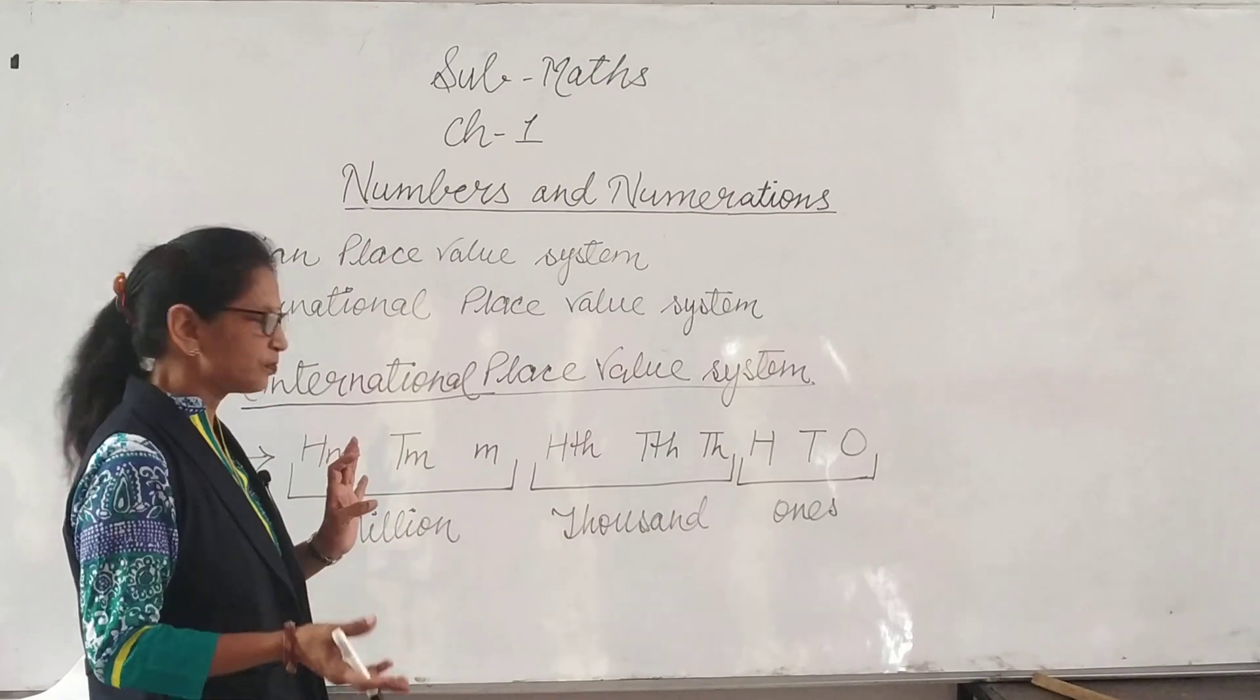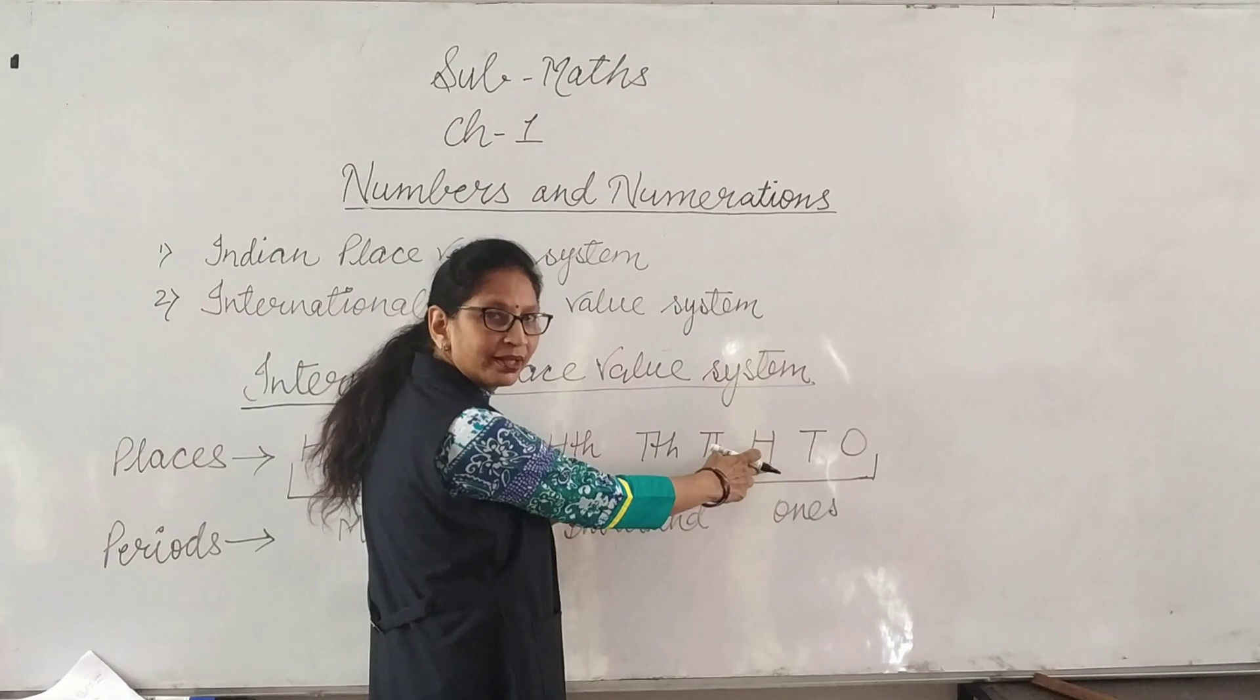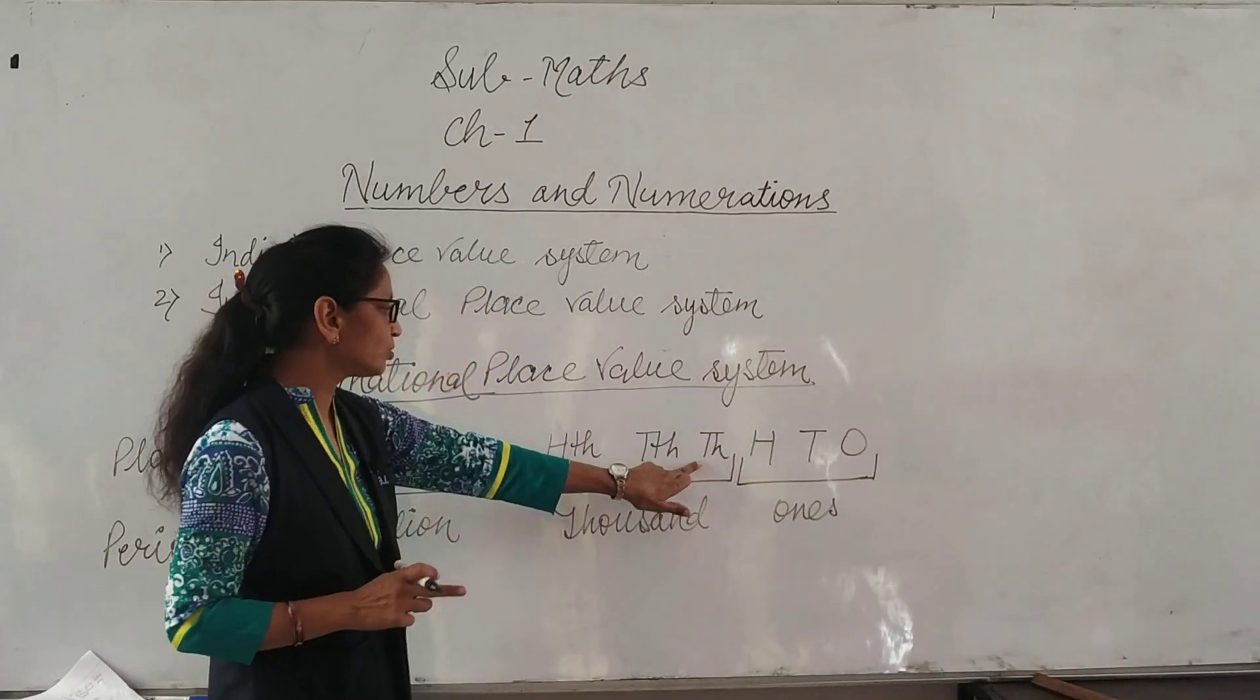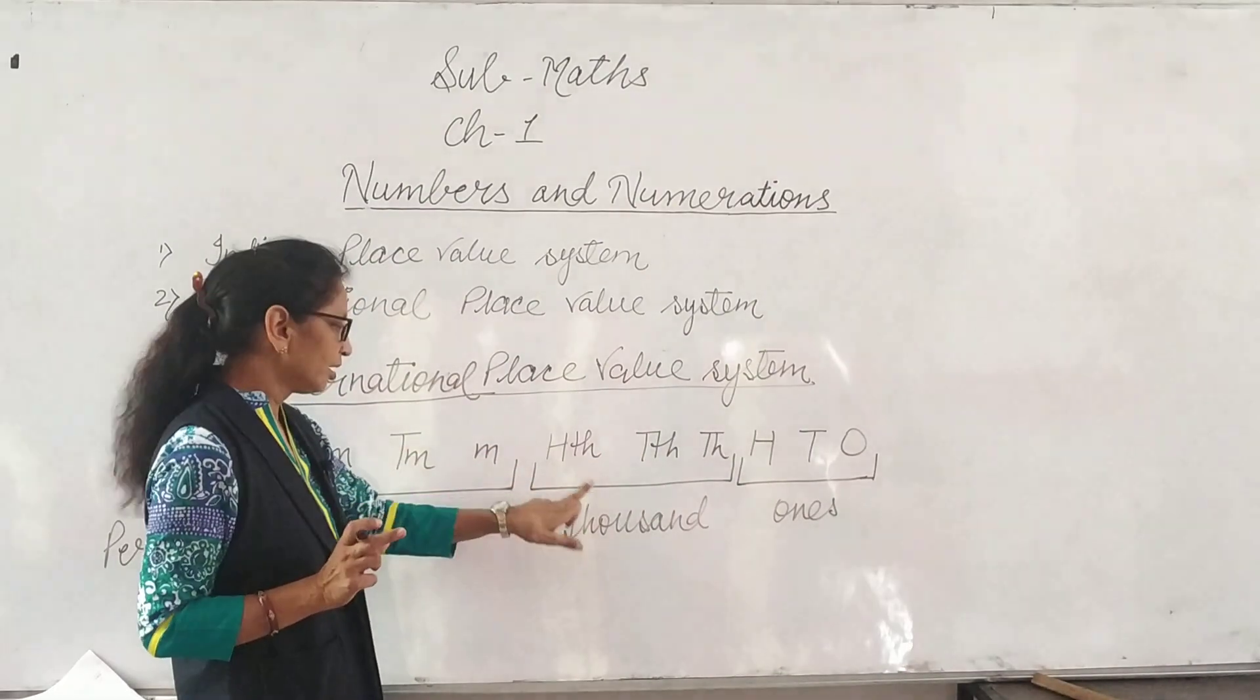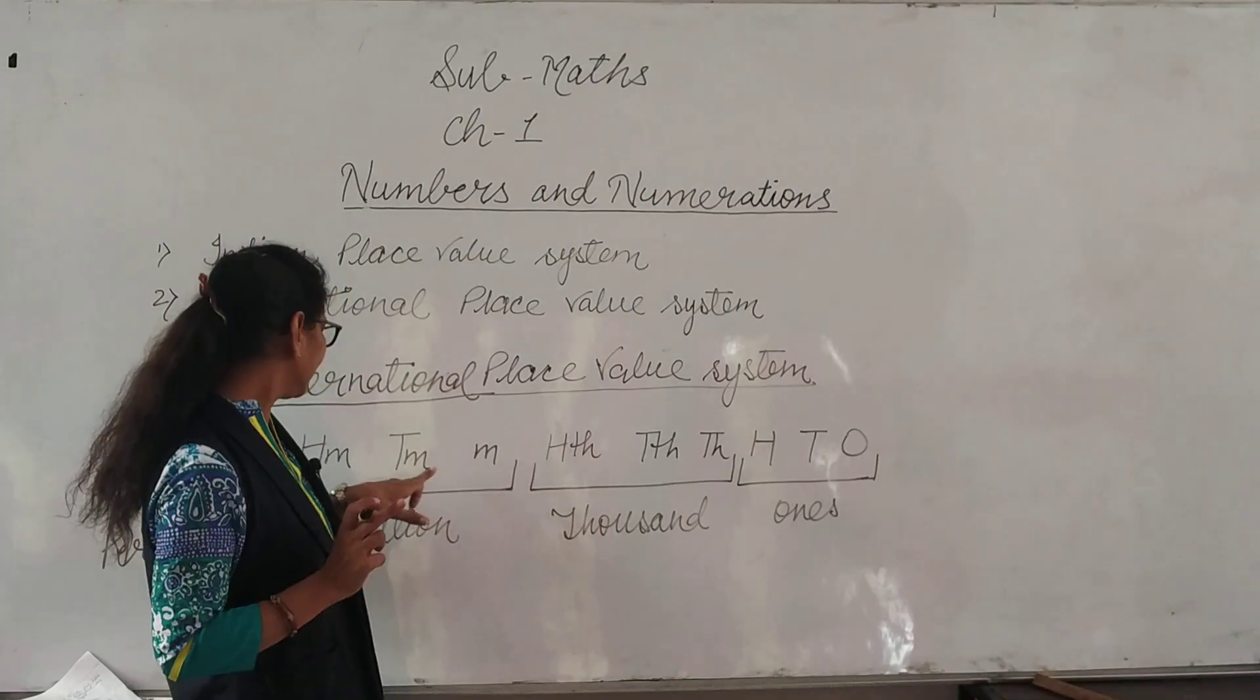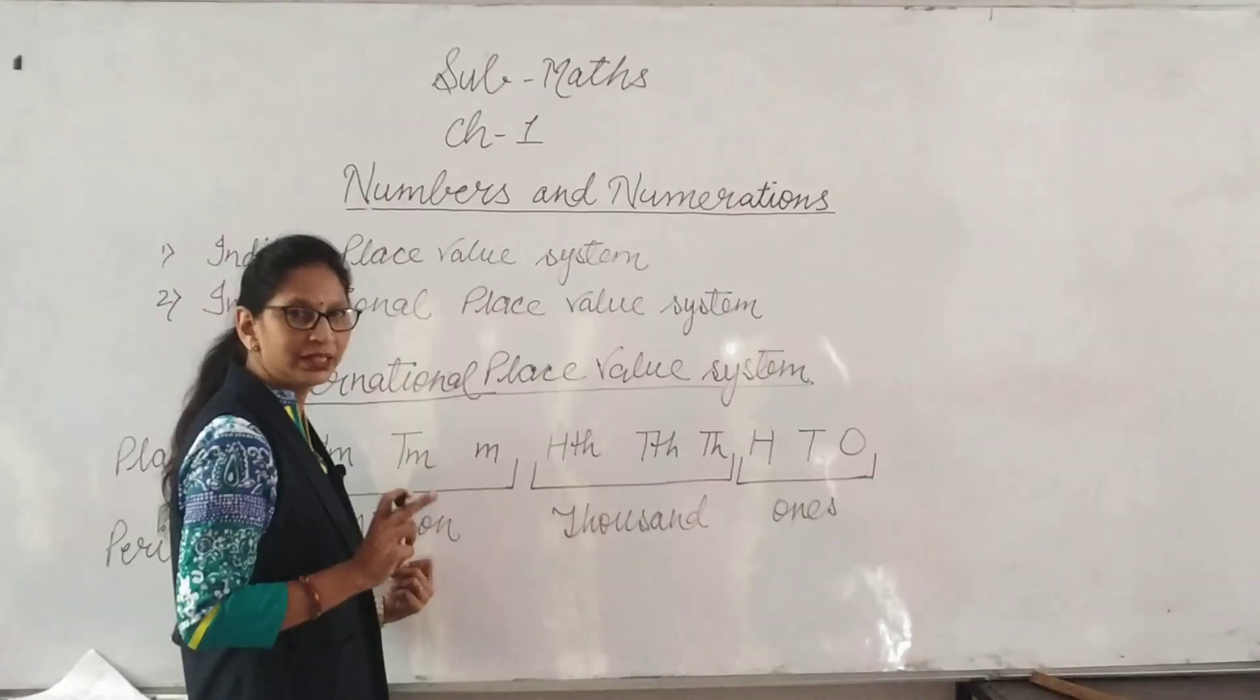Again, we will divide in groups or periods. Ones, tens, hundred is in one group, that is called ones group. Thousand, ten thousand, hundred thousand is another group, that is called thousand group. Million, ten million, and hundred million is another group, and that is called million group.